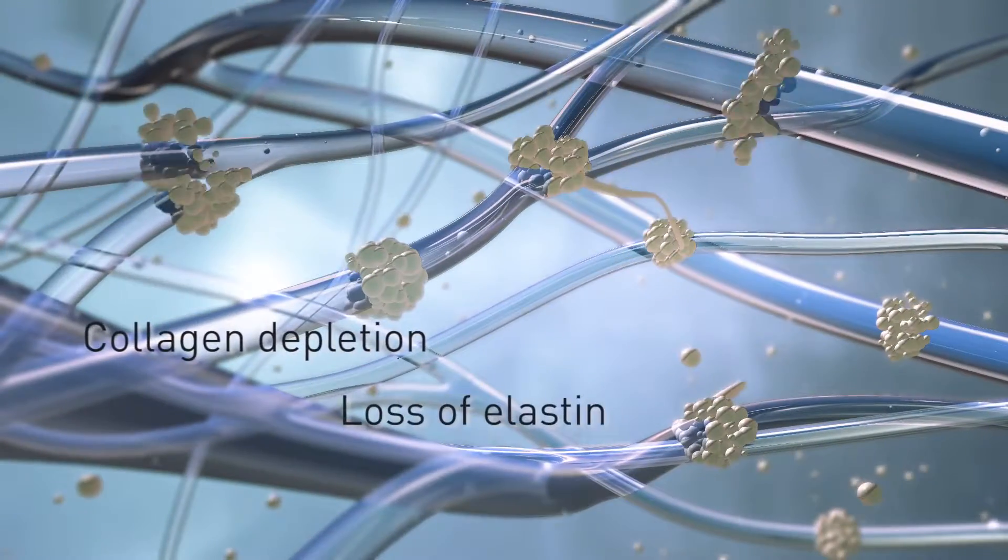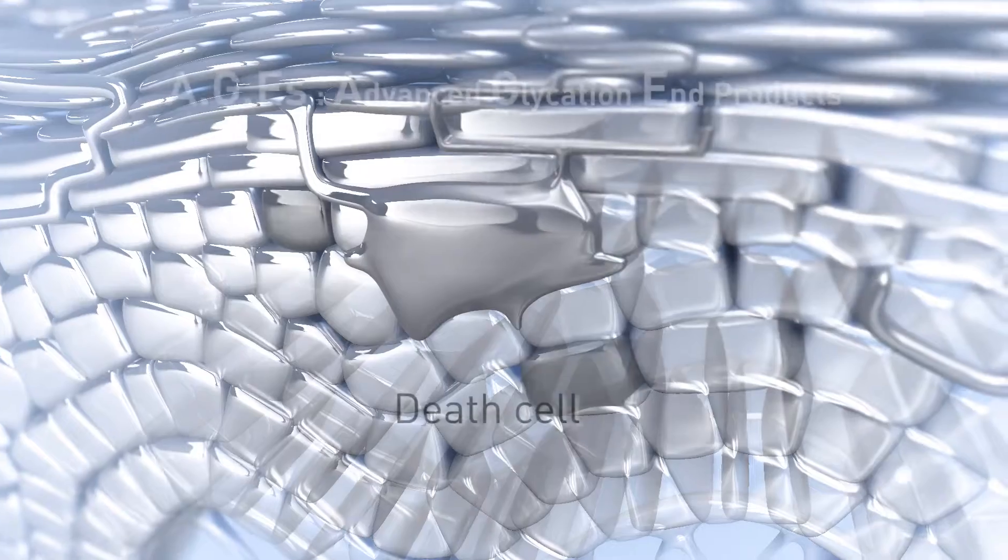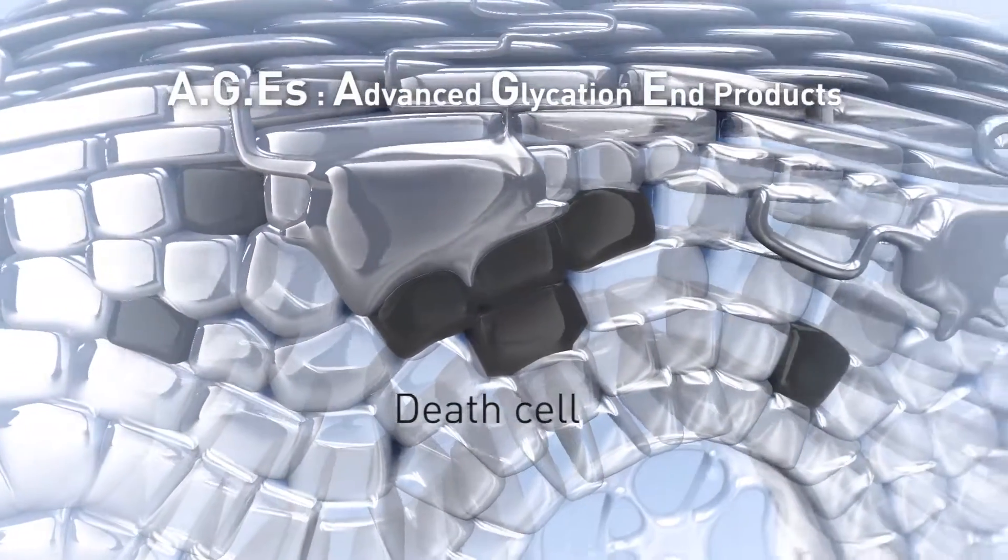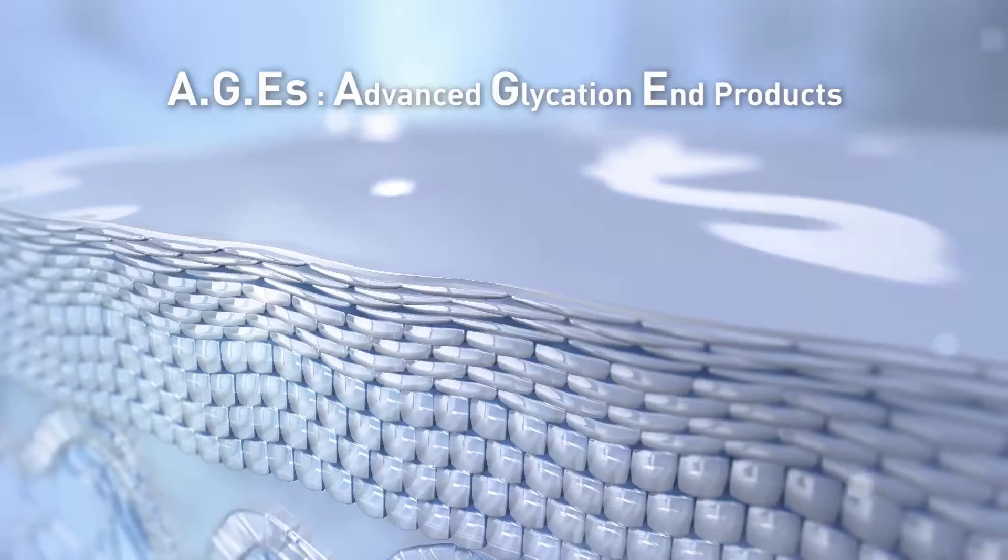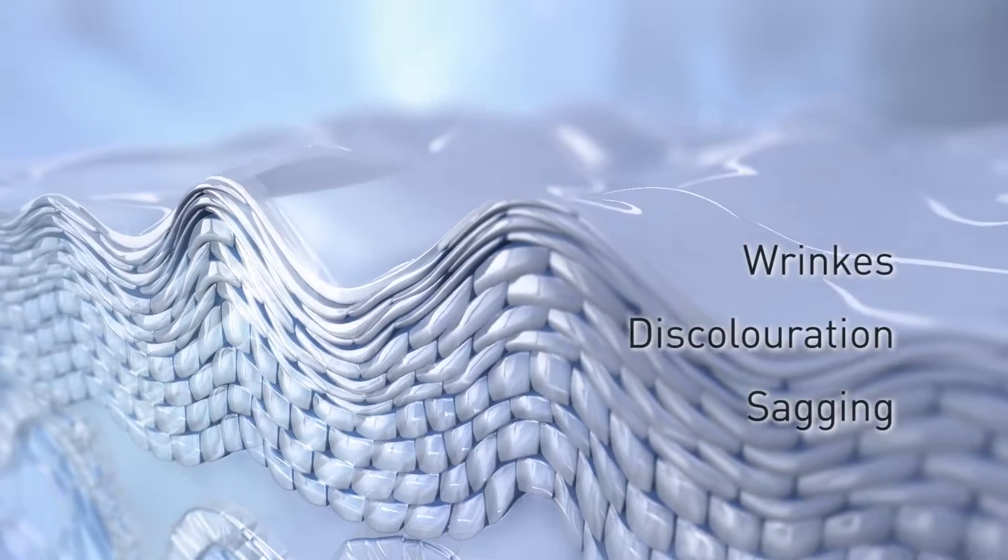When excessive glucose binds with proteins, this is one of the main factors that destroy our cells silently. This process is known as AGE. It causes our skin to age.